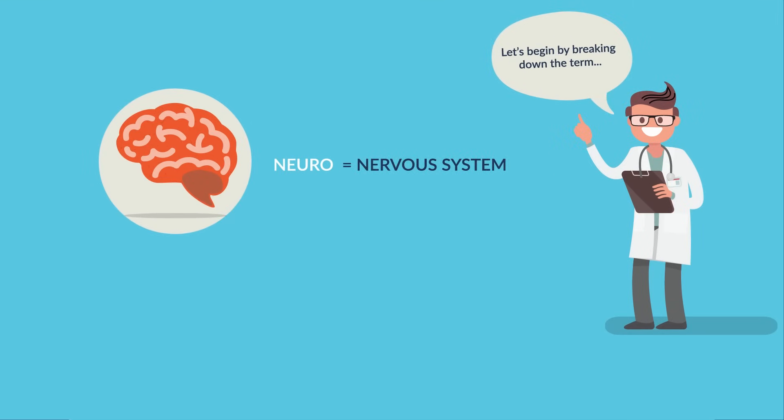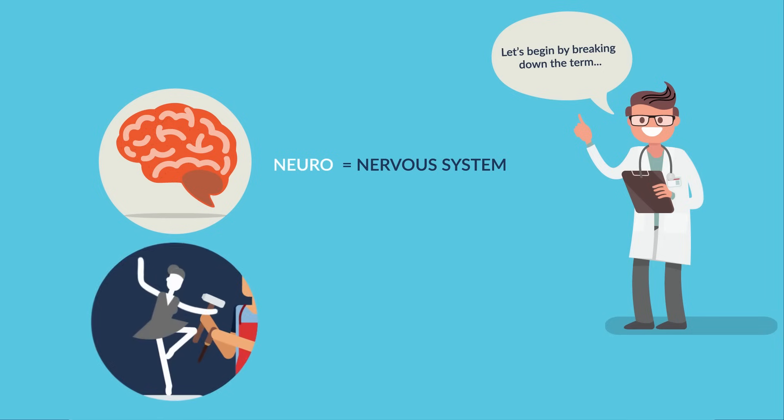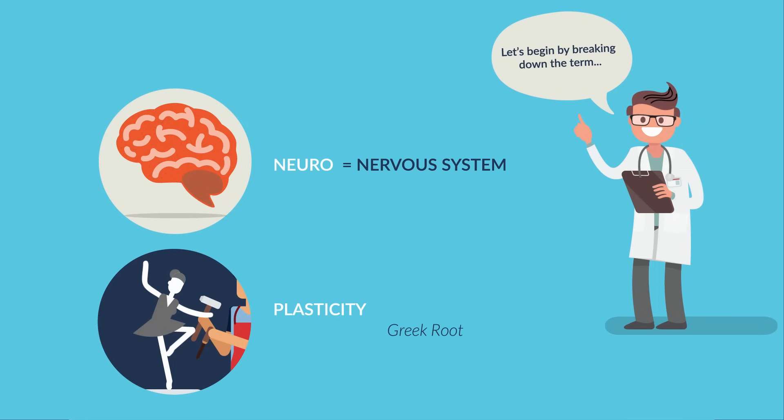The nervous system consists of the brain, spinal cord, and all the nerves that send and receive information to and from the brain. And plasticity, which comes from the Greek word plastos, meaning moldable. So together, neuroplasticity means a moldable brain.